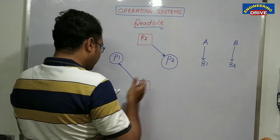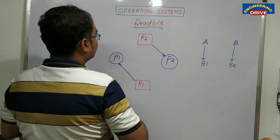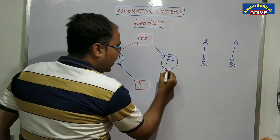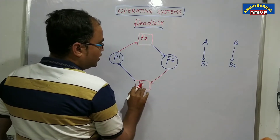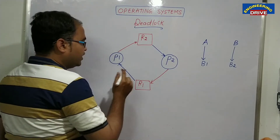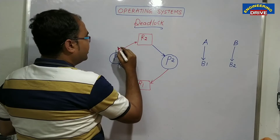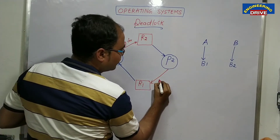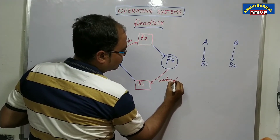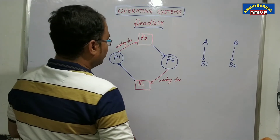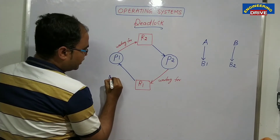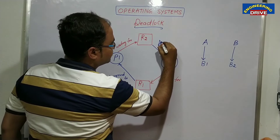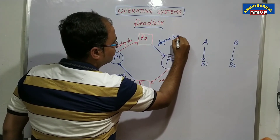We can write this as: P1 is waiting for R2, and P2 is waiting for R1. And for the assignments: R1 is assigned to P1, and R2 is assigned to P2. Now listen how the deadlock will occur here. There is one name for this graph — I will tell you later. Just see here.